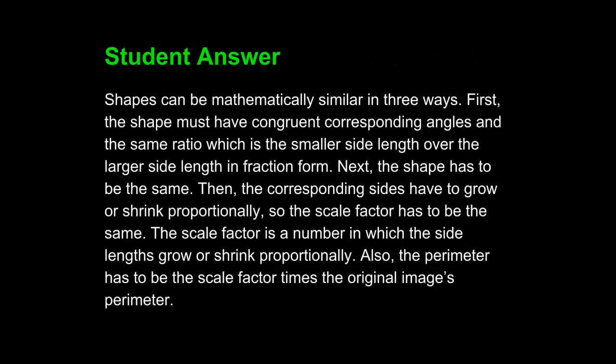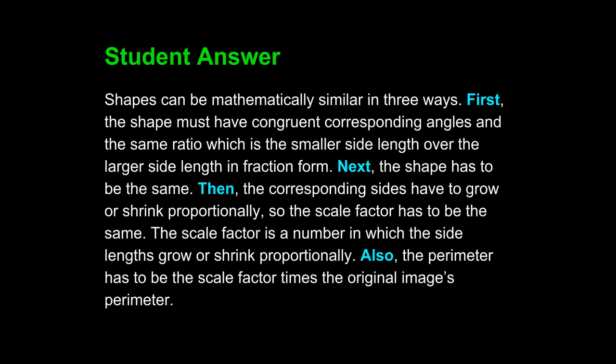Here's another student answer. First, next, then, and also are simple transition words. This student has shown the relationship among the different ideas. Let's read and see how it flows. Shapes can be mathematically similar in three ways. First, the shape must have congruent corresponding angles and the same ratio, which is the smaller side length over the larger side length in fraction form.